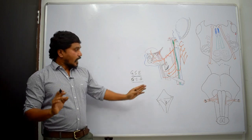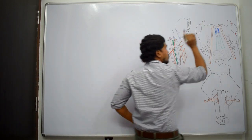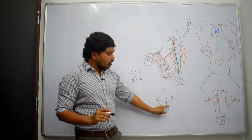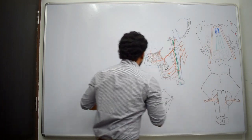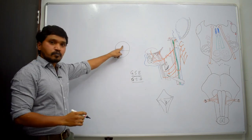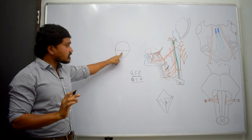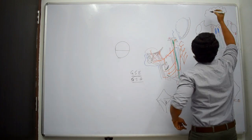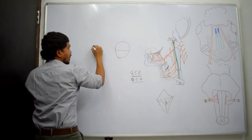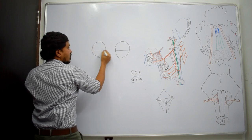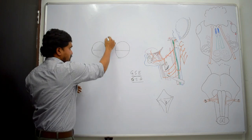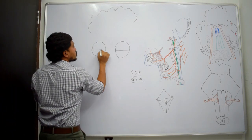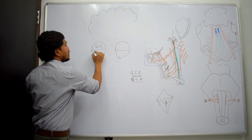The nucleus of the hypoglossal nerve is the hypoglossal nucleus, present deep to the hypoglossal triangle in the medulla oblongata, deep to the floor of the 4th ventricle. If you take this nucleus separately, it is divided into two parts: one part solely for the genioglossus, and another part for the rest of the muscles.